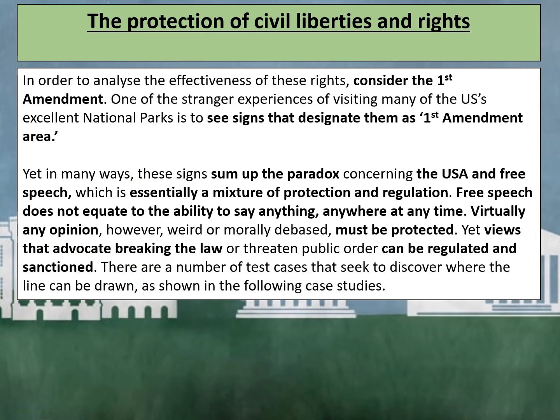In order to analyse the effectiveness of these rights, consider the First Amendment. One of the stranger experiences of visiting many of the US's excellent national parks is to see signs that designate them as First Amendment areas. Yet in many ways these signs sum up the paradox concerning the US and free speech, which is essentially a mixture of protection and regulation. Free speech does not equate to the ability to say anything, anywhere, at any time.